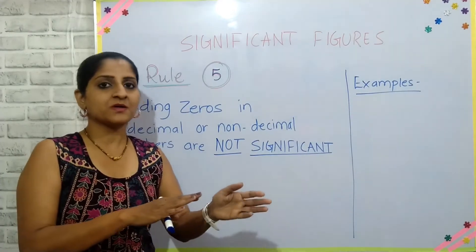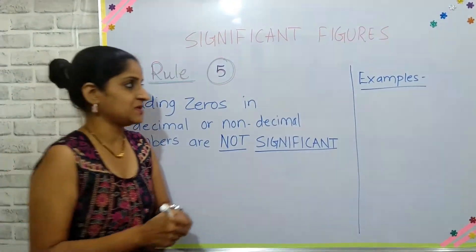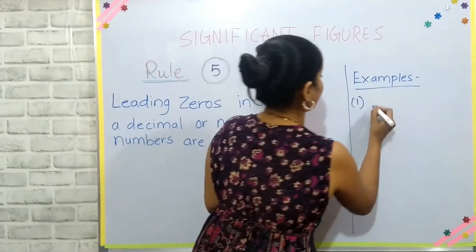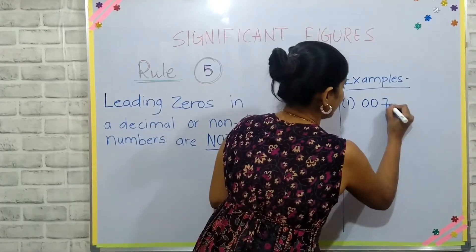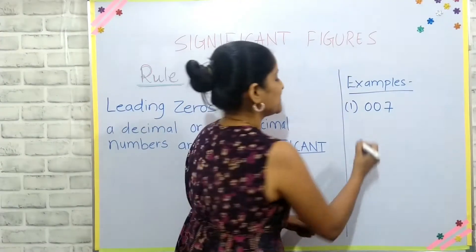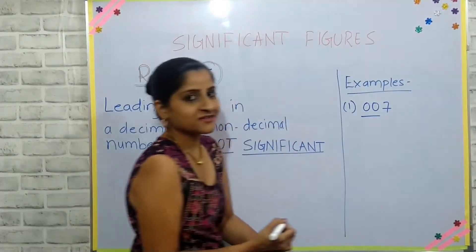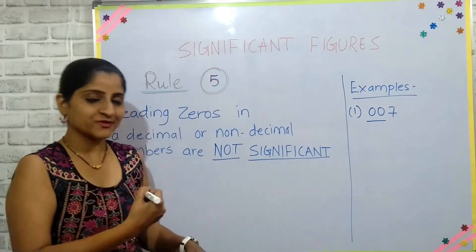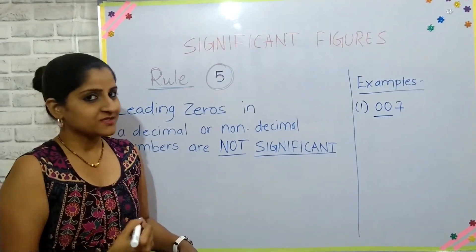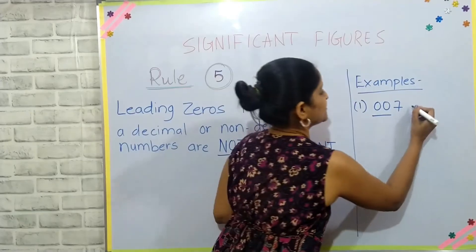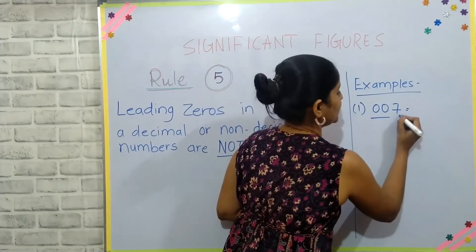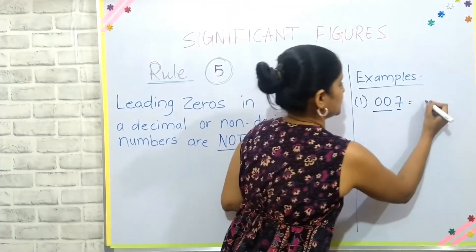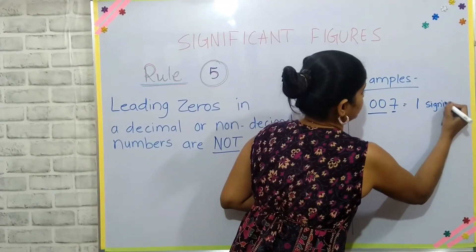I'll take one example of a decimal number and one of a non-decimal number. Take the number 007. In this number, these two zeros are considered leading zeros — a leading zero is the zero that appears before the number — and those zeros are not significant. So this number has only one significant figure: seven.